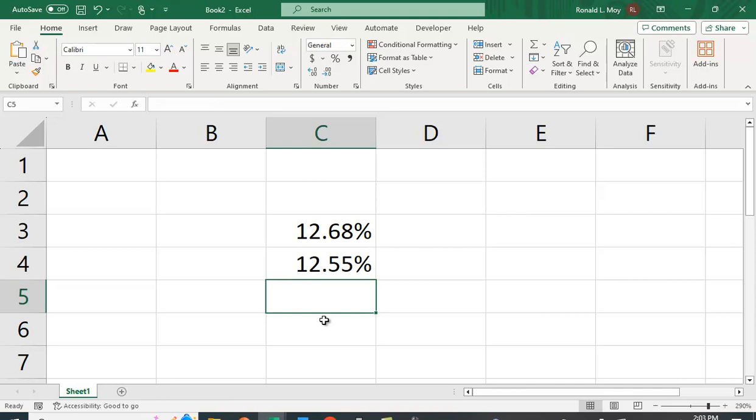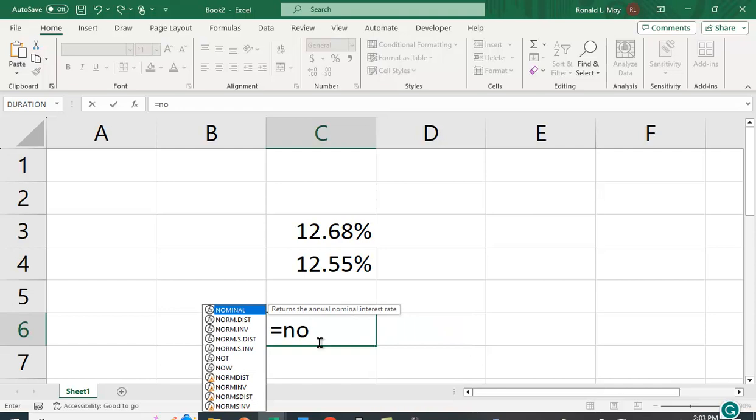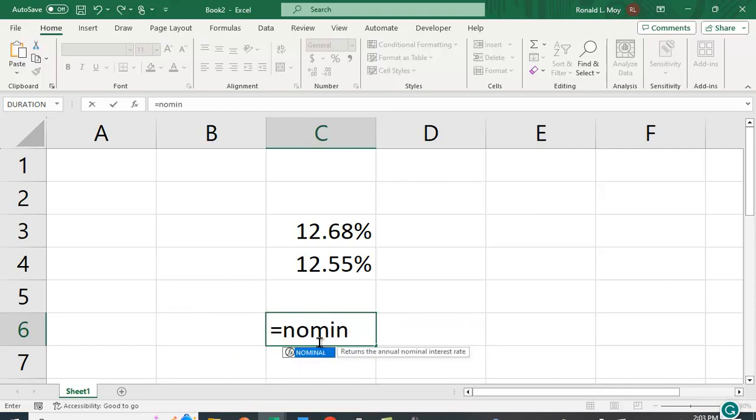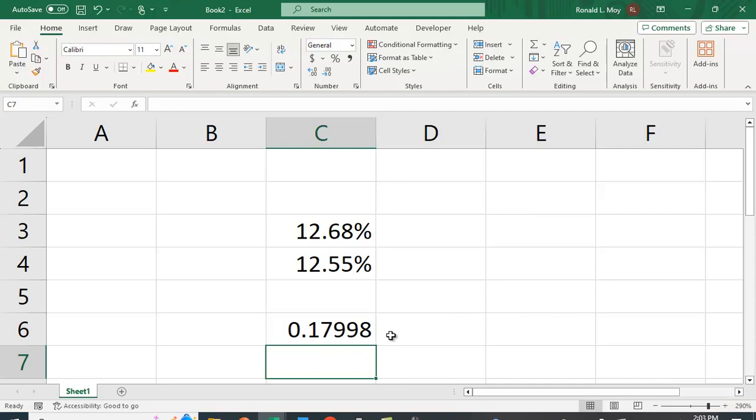In Excel, this function is NOMINAL. It asks for the effective rate, which was 19.56%, and the number of periods was 12. You get 0.17998. We can format it as a percentage and expand the decimal places to get 18%.